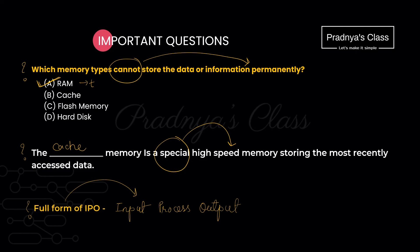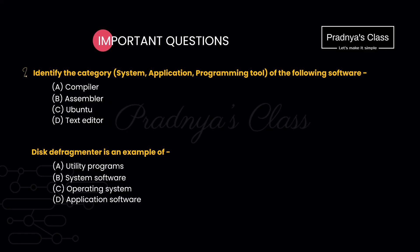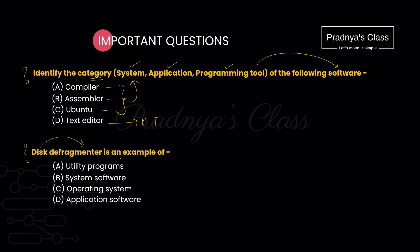We need to identify the category — system software, application software, or programming tool — for the following: compiler and assembler come under system software; Ubuntu is also system software; and text editor is a programming tool. Defragmenter is an example of a utility program.